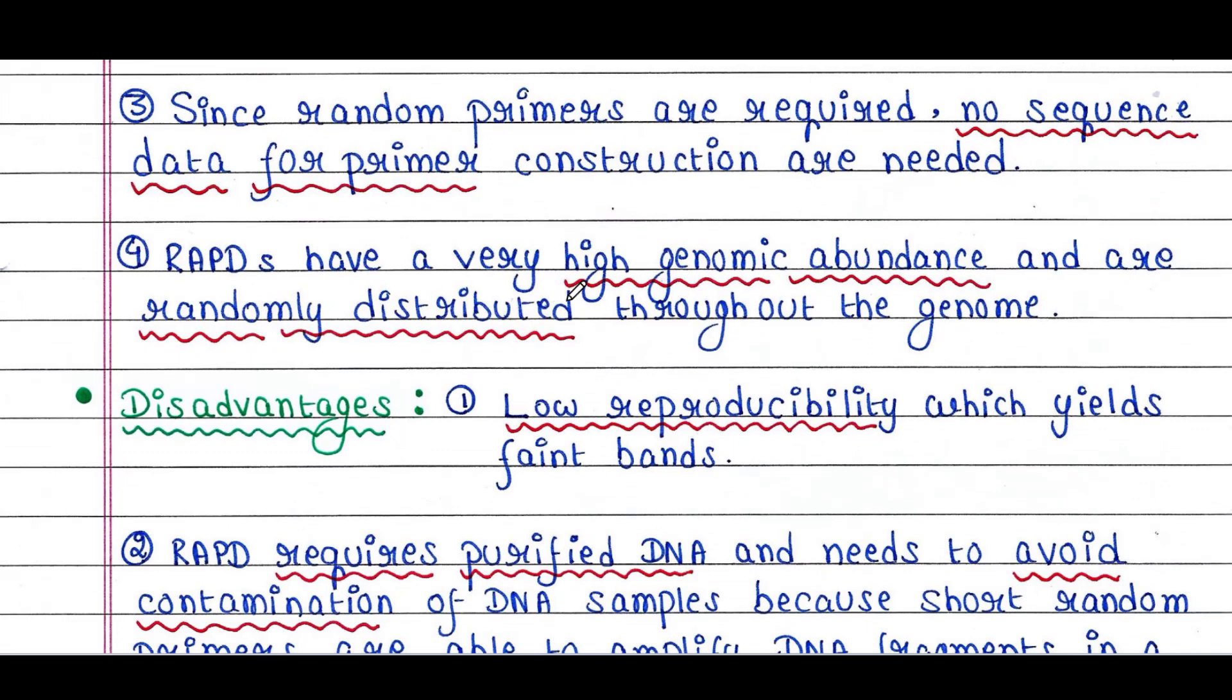Since random primers are required, no sequence data for primer construction are needed. RAPDs have very high genomic abundance and are randomly distributed throughout the genome. These short primers are able to randomly amplify many sites of DNA, so it is advantageous.